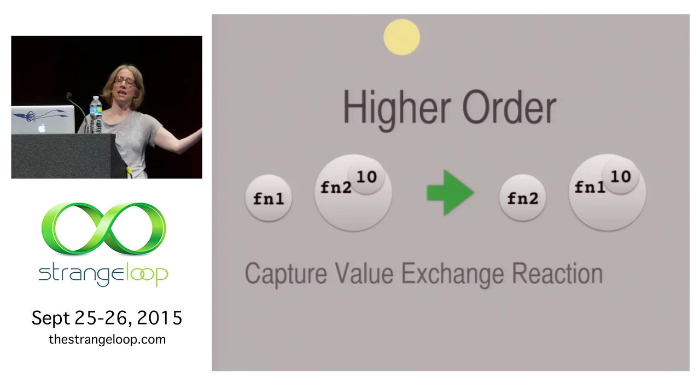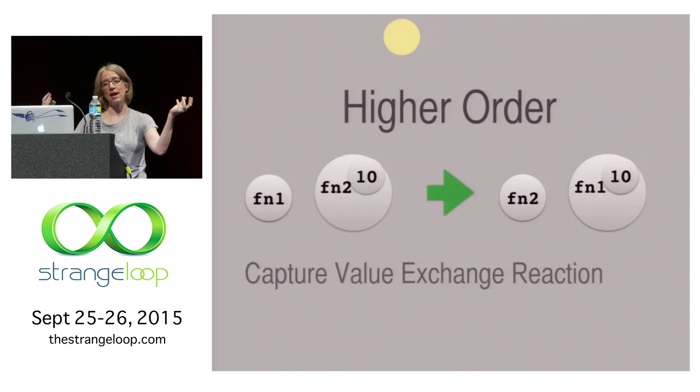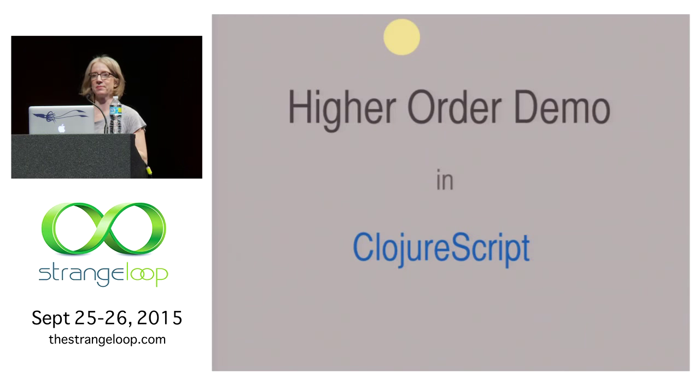I added one more rule that you can allow functions to exchange captured values. What this means is if you have two function molecules, one that has something captured in it and one doesn't, and if they bump into each other and react, they can just go ahead and exchange their captured values. This just does some more stirring and lets things react a little bit more. So yay, demo time.